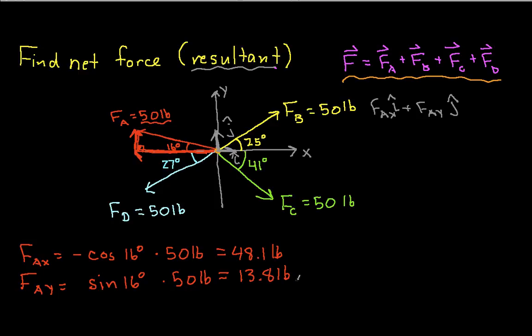I have the x component of FA and the y component of FA. So I can write that FA is -48.1 pounds times i hat, and I missed a sign there, so I better put the sign here, plus 13.8 pounds j hat. That gives me FA.